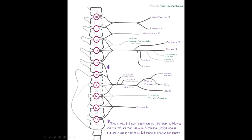For the sacral plexus, L5-S1 (with a little contribution from L4) forms the sciatic nerve. Importantly, we also have the superior gluteal nerve supplying gluteus medius, and the infragluteal nerve supplying gluteus maximus — both coming off proximal to the sciatic nerve. The sciatic nerve then becomes the peroneal or fibular and tibial nerves distally.